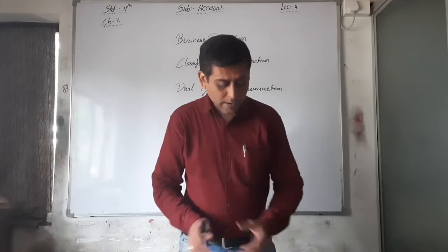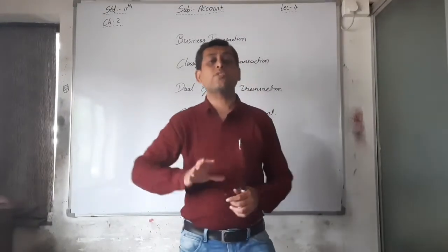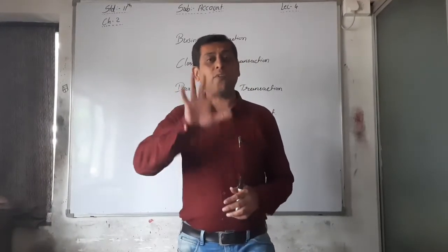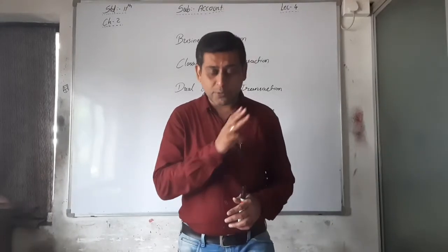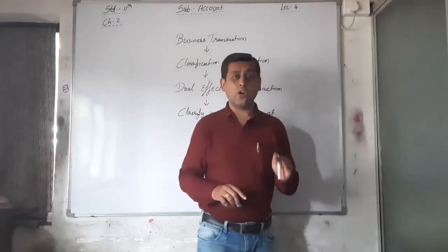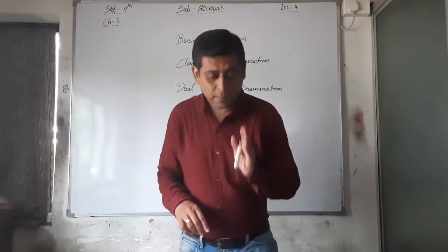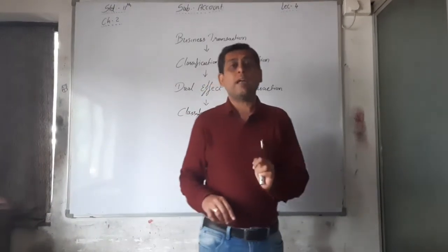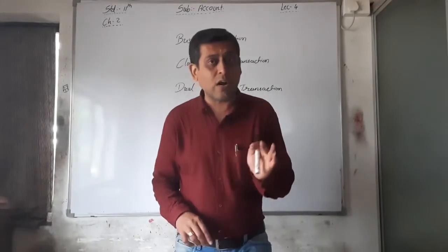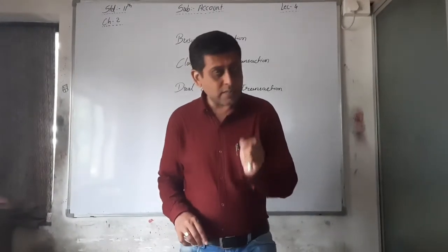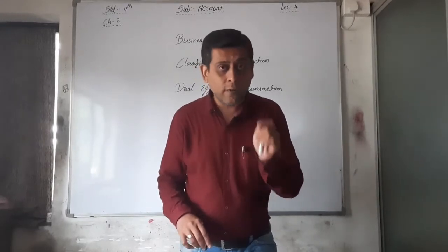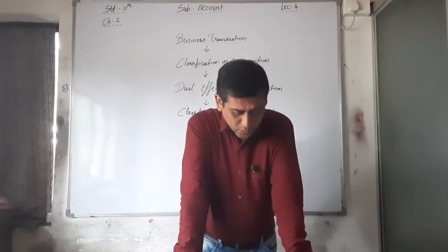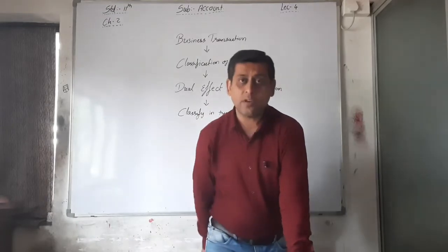I told you that illustration number 5 is your homework — 50 accounts are given and you have to classify them into three different types: personal, real, and nominal. I hope you all completed that. Here I am giving a speedy brief of those 50 accounts so that if you don't understand which type any account is, you can understand it from this review.